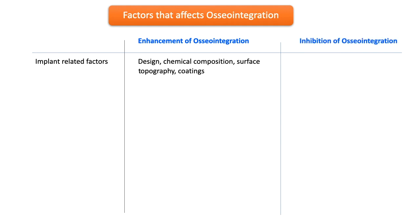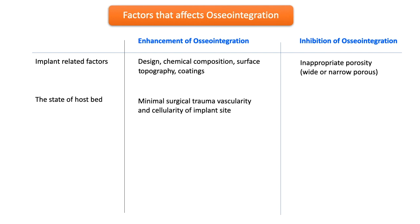Inappropriate porosity can inhibit osseointegration. Regarding the host bed, suitable osseointegration requires minimal surgical trauma, and adequate vascularity and cellularity of the implant surface. Bone defects, osteoporosis, smoking, diseases such as rheumatoid arthritis, and advanced age can all lead to inhibition of osseointegration.